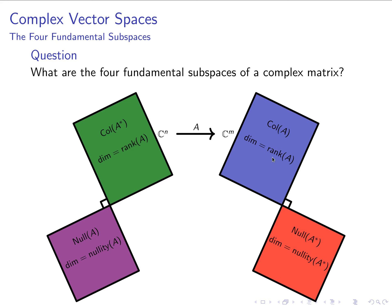Aside from those two changes, everything else is the same. The dimension of the column space is still the rank, and that dimension always equals the dimension of the column space of the conjugate transpose. The dimension of the null space is still the nullity. The dimension of the null space of the conjugate transpose plus the dimension of the column space still equals m, and the dimension of the null space plus the dimension of the column space of the conjugate transpose still equals n.